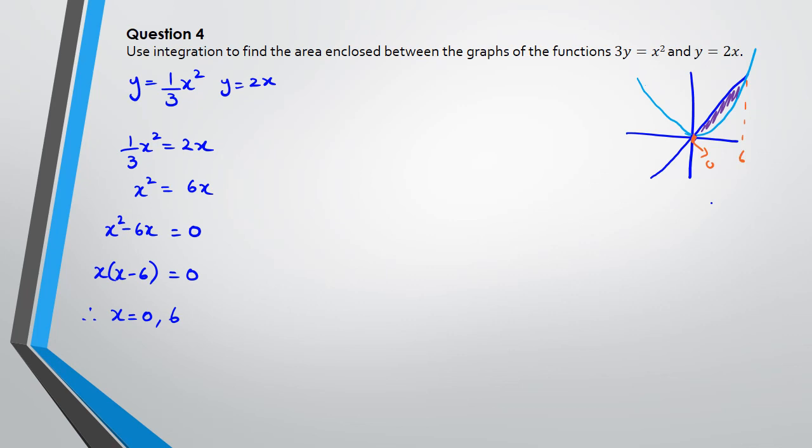Now when you want to find area between the two curves, what we need to do is find, well first we have the two intervals, so in this case it's 6 and 0, and then we have the top minus bottom curve dx to work out the actual area. So between 6 and 0, the top one in this case is 2x minus the bottom one, bottom equation is one third x squared, dx.